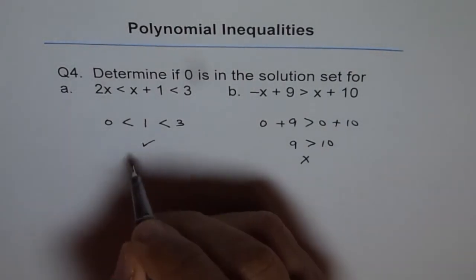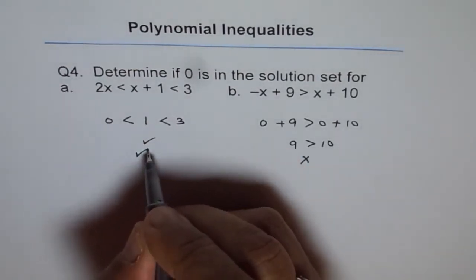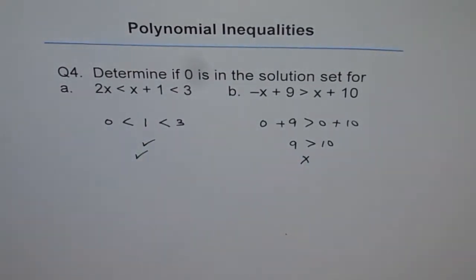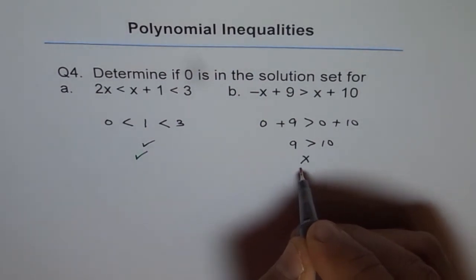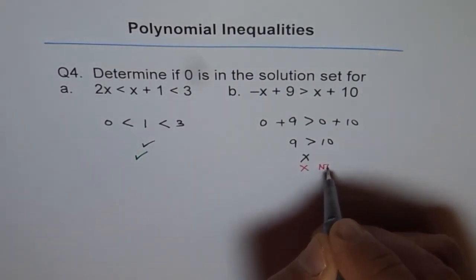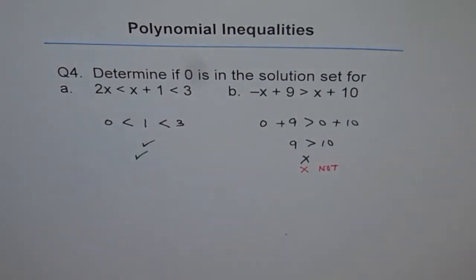So this one is a solution. 0 is a solution for this one, but 0 is not a solution for this one. So that is what it is.